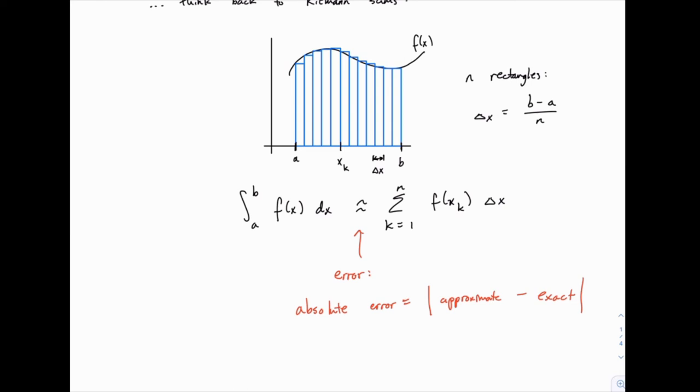We can take this one step further. Suppose the correct answer, the exact value for an integral, was 1, and we got an answer of 2. That would be pretty bad. The absolute error would be 1, but if the correct answer was 100 and we got 101, we would have that same absolute error of 1, even though relatively speaking, we were much closer to the correct answer.